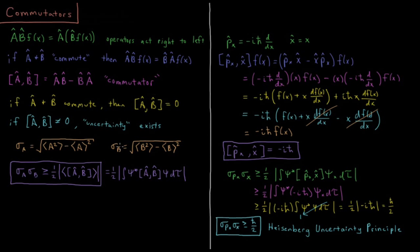And similarly for B, B has some uncertainty which is related to the square root of B squared expectation value, minus the square of the expectation value of B. Okay, so what is the uncertainty product of these two?